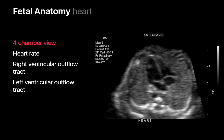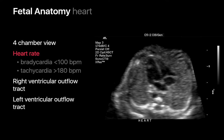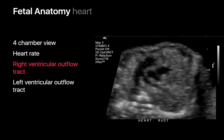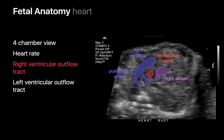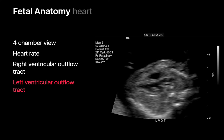Our assessment of the fetal heart begins with evaluating its morphology and function on a four-chamber view. We measure the fetal heart rate, noting if the rate is either below 100 or above 180 beats per minute. We then assess the right ventricular outflow tract and the left ventricular outflow tract.